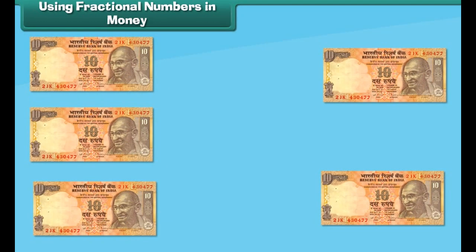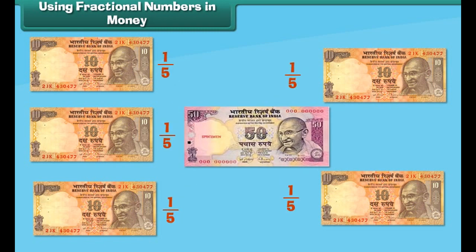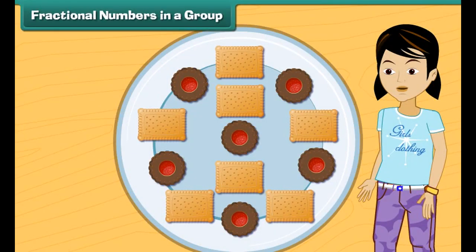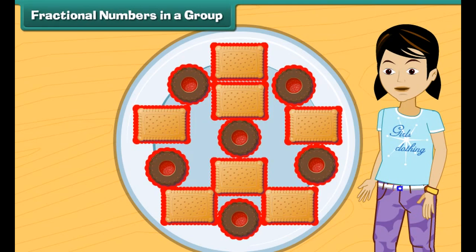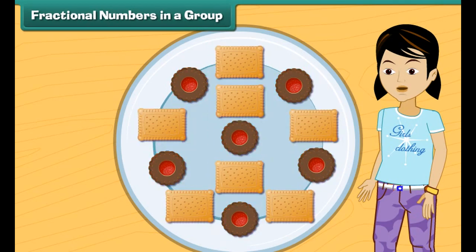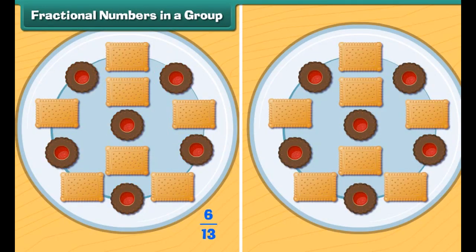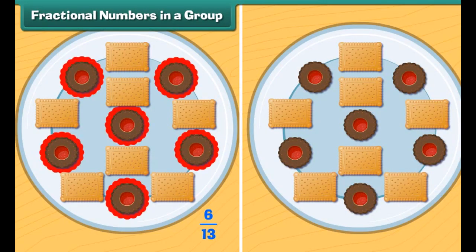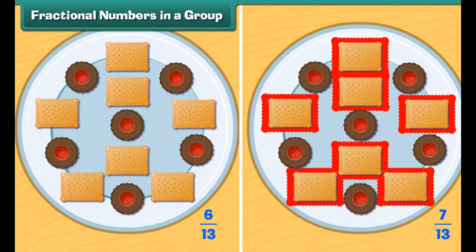Four divided by four is one, so four quarters make one whole cake. You can also divide the cake into more number of pieces. Look at these 25 paisa coins. One 25 paisa coin is one-fourth of the one rupee coin. Similarly, one ten rupee note is one-fifth of one fifty rupee note. So, kids, fractional numbers are used in money too.